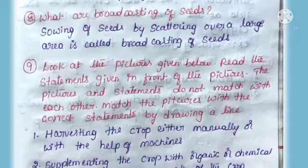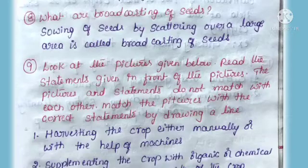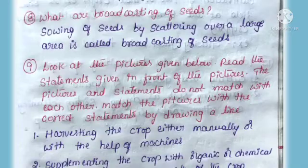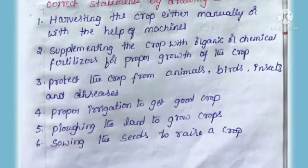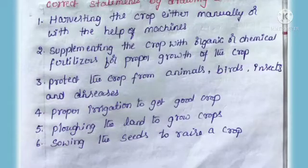Next question: Look at the picture given below. Read the statements given in front of the picture. The pictures and statements do not match with each other — match the picture with the correct statement by drawing a line. First one: Harvesting the crop either manually or with the help of machines. Second one: Supplementing the crop with organic or chemical fertilizers for proper growth of the crop.